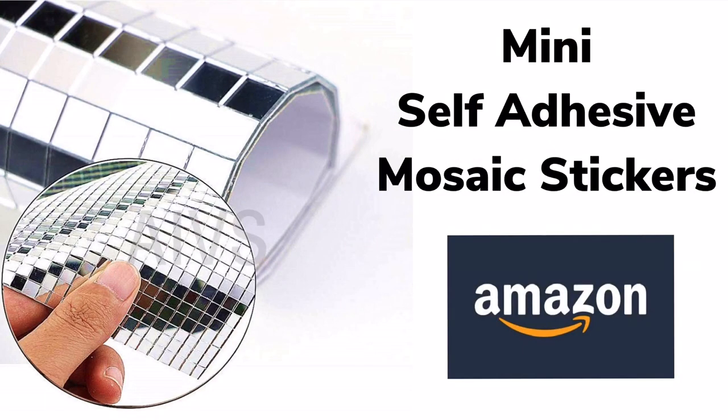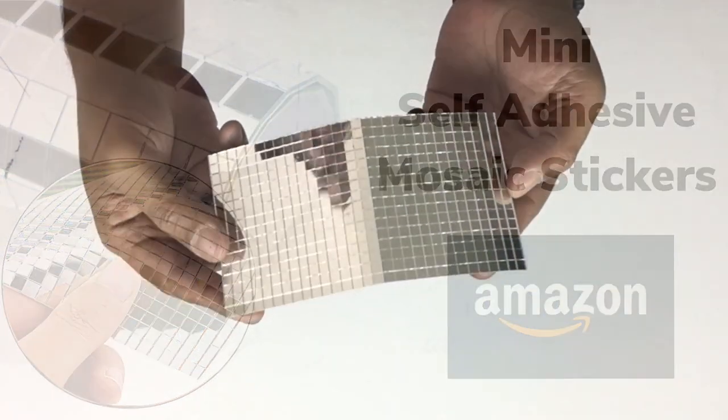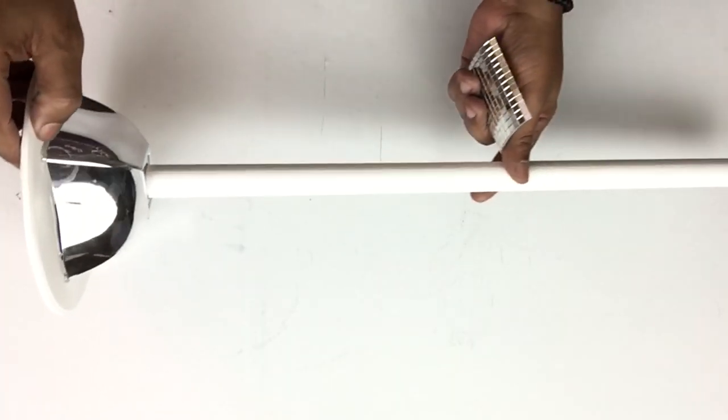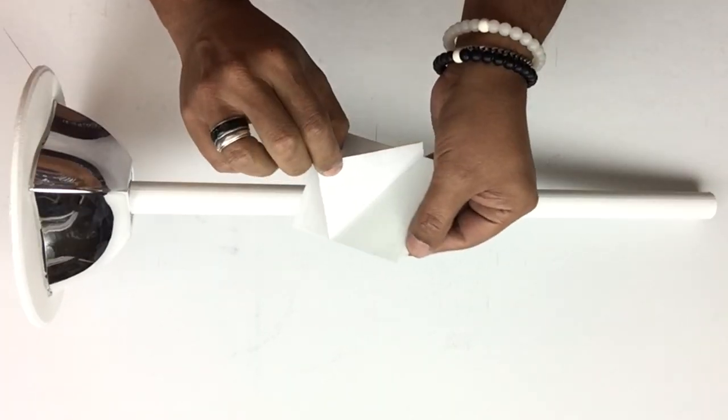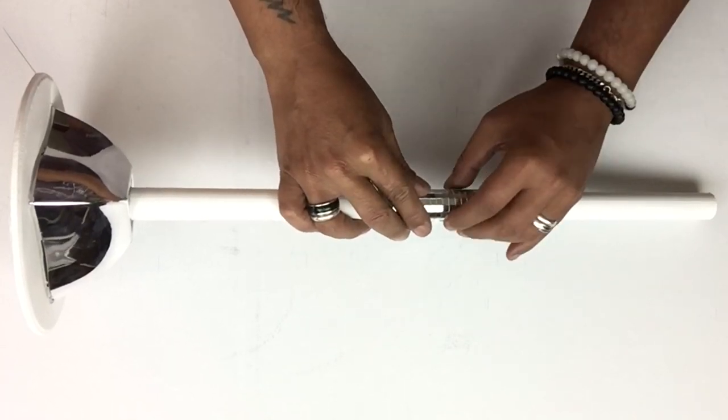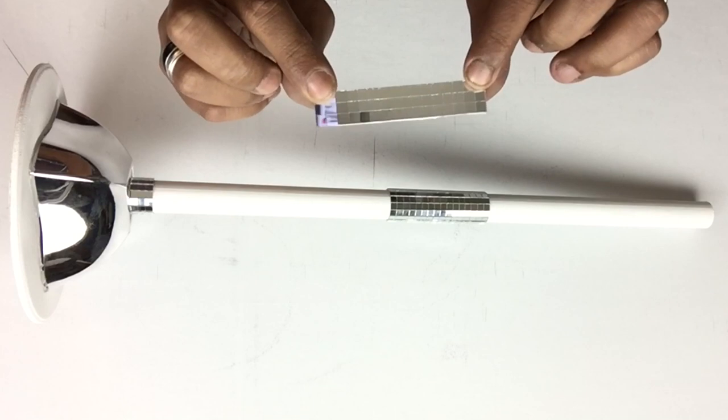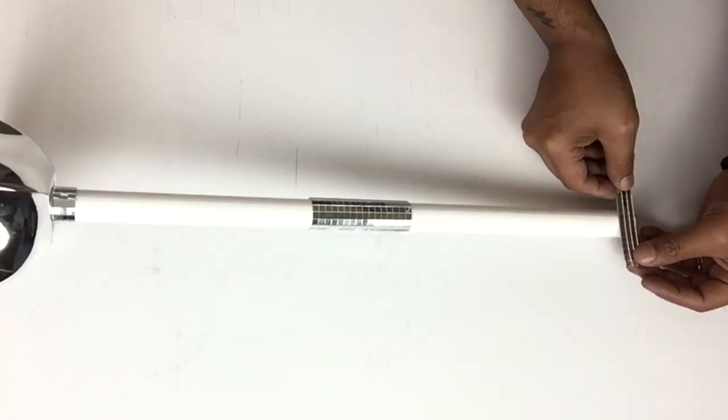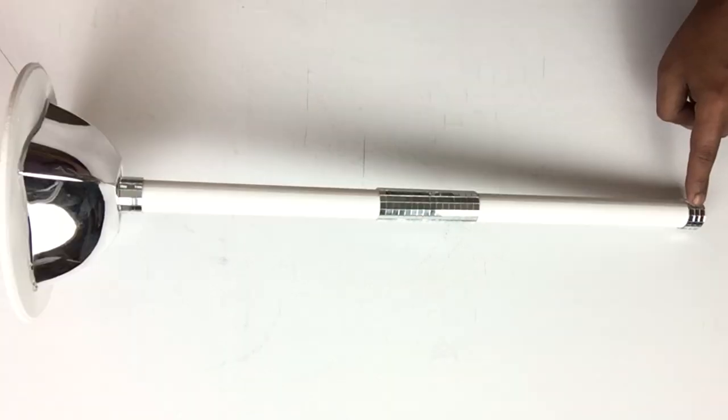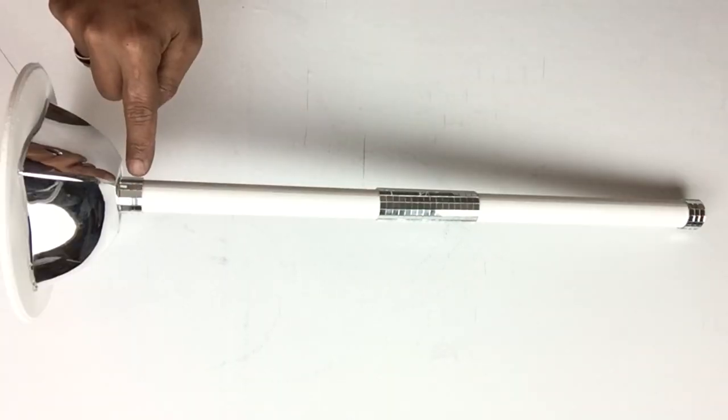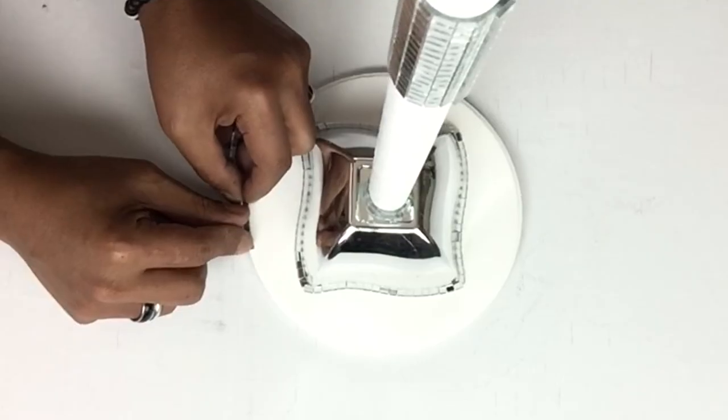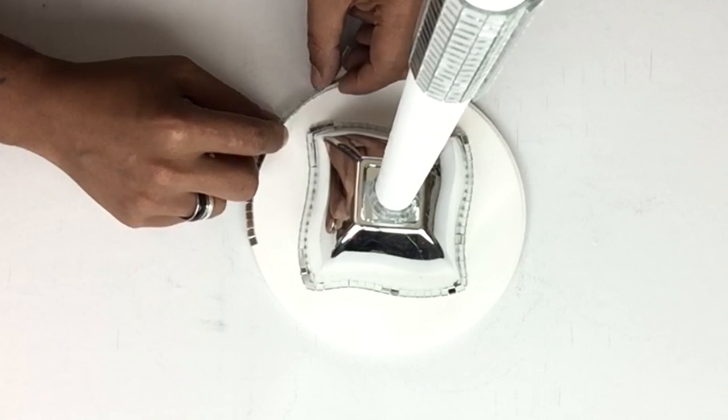Next, I'll be using mini self-adhesive mosaic stickers. I'll cut it in half with 16 rows remaining, then peel the back and place it in the center of the rod. I also used three rows of mosaic stickers and placed one on each end of the rod. I also applied single strips of mosaic stickers around the bow and repeated the same steps around the wooden plaque.